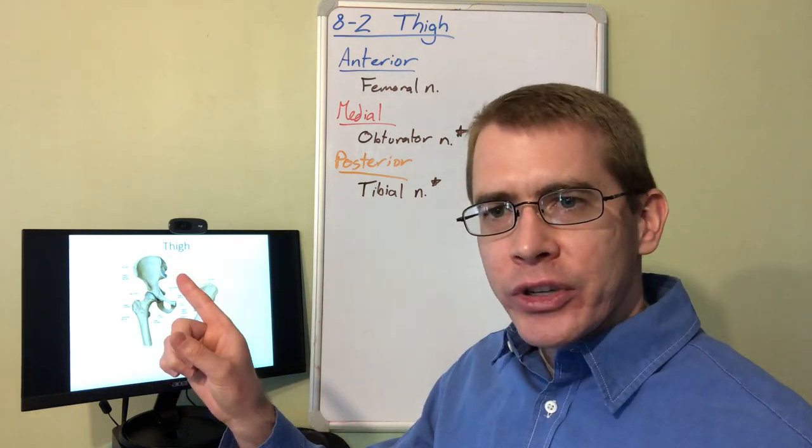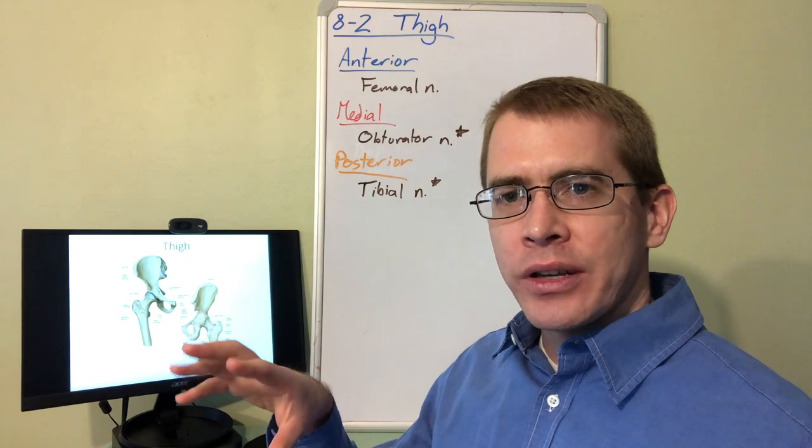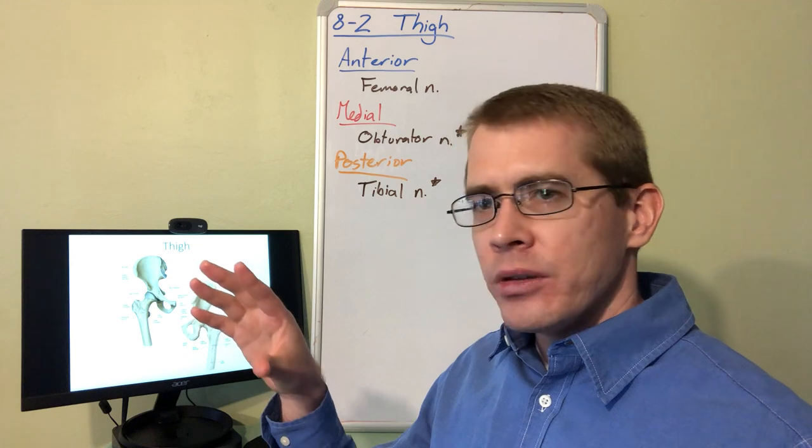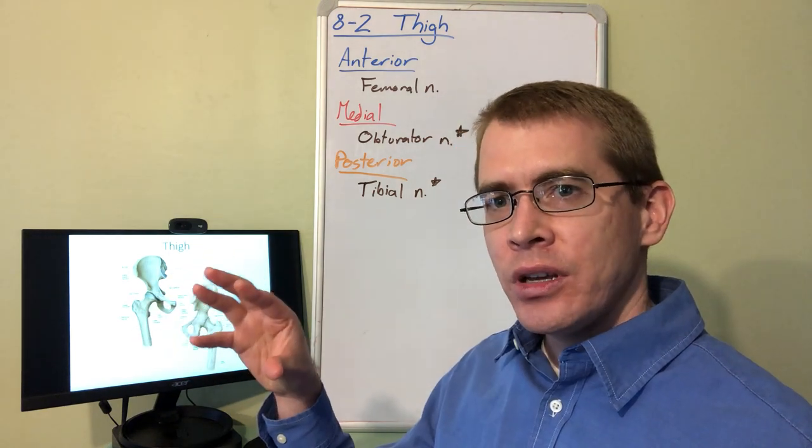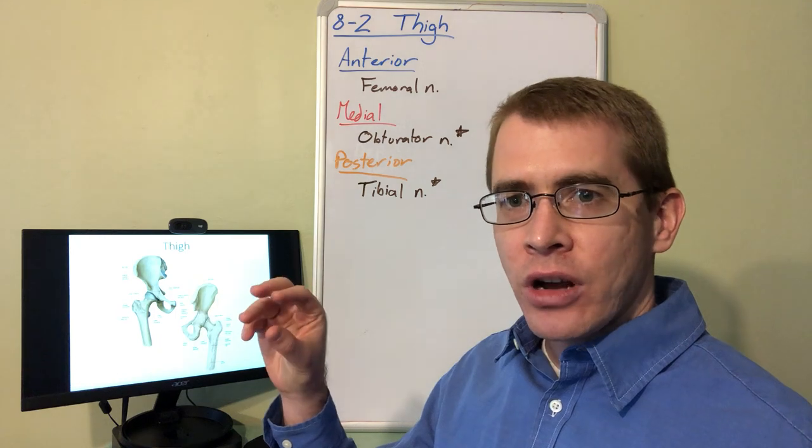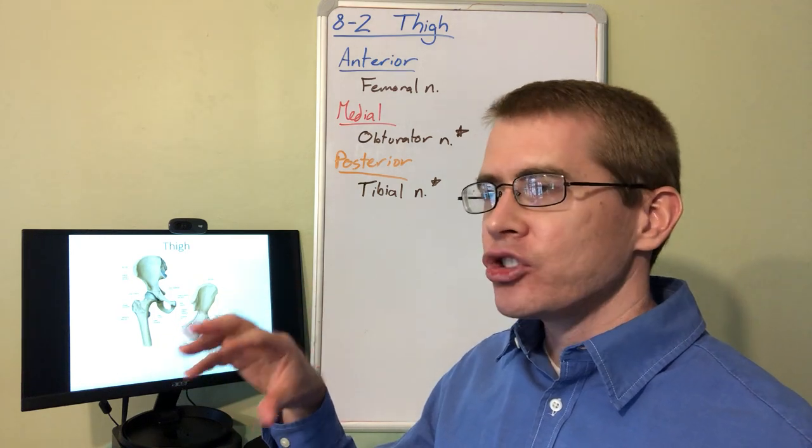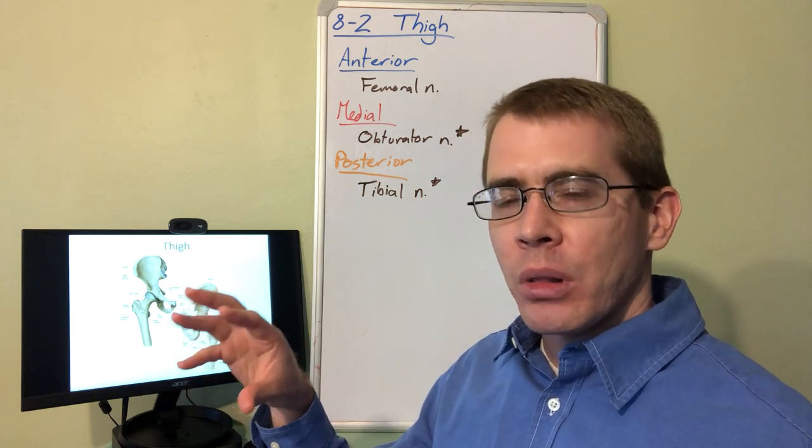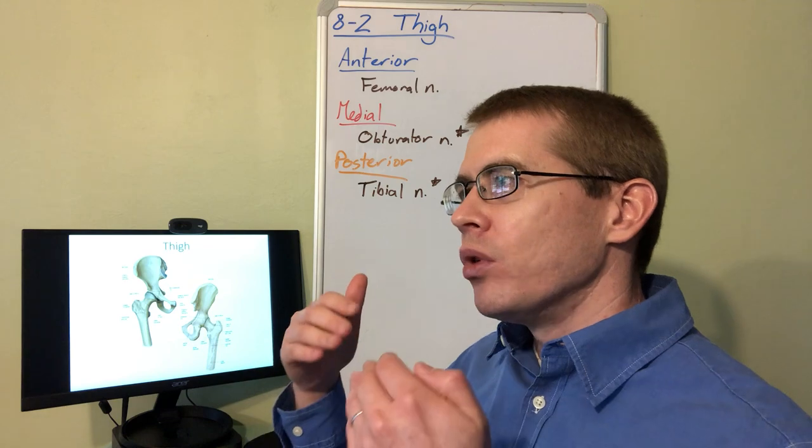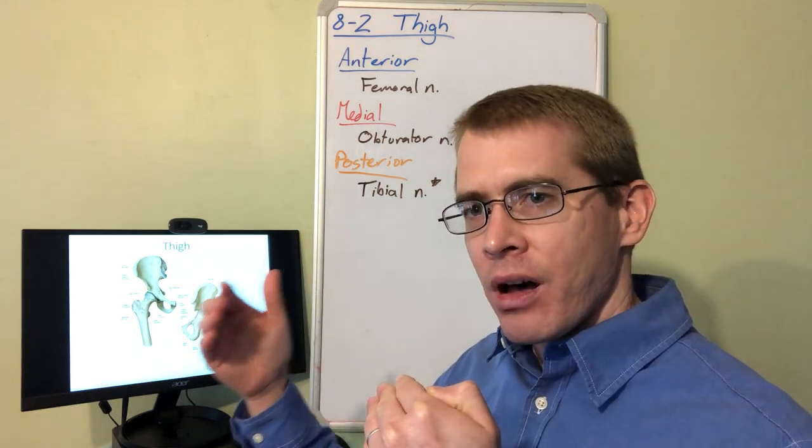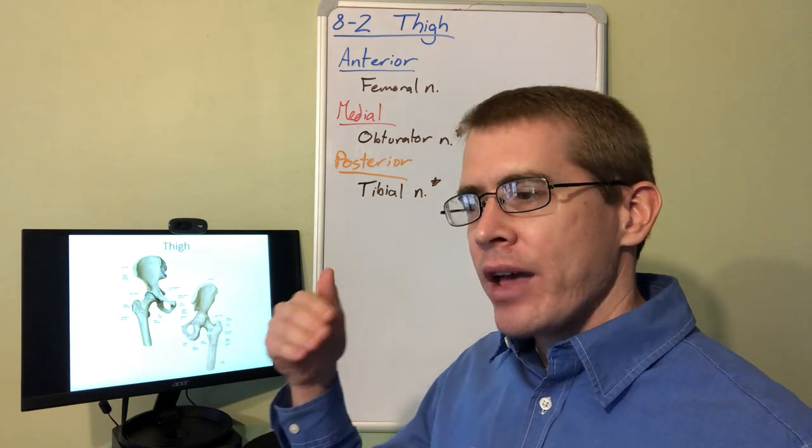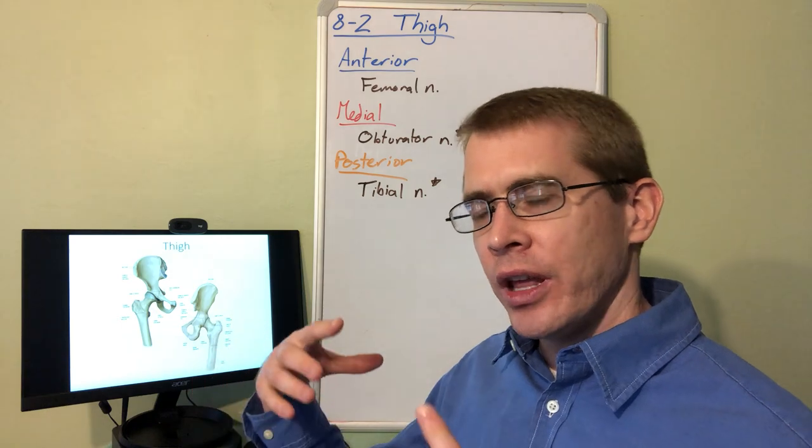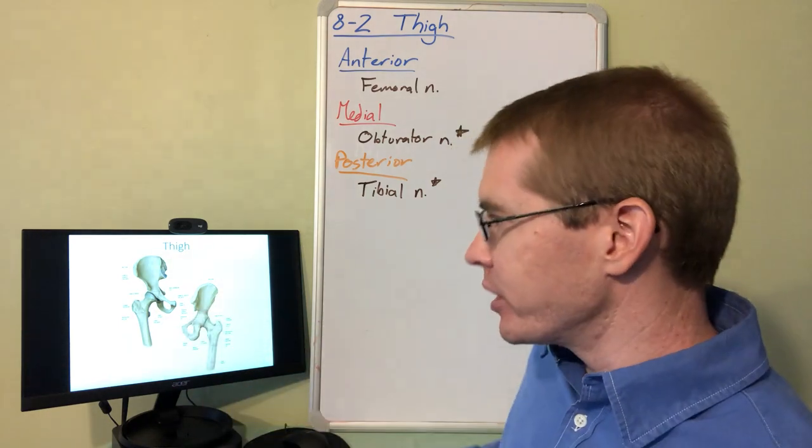For instance, the pelvis looks a lot like the scapula and serves some of the same functions, but the pelvis is attached firmly to the vertebral column so you're not going to get the same mobility. The femur is a lot like the humerus. We'll go through all the compartments of the thigh and see that a lot of the analogies hold.